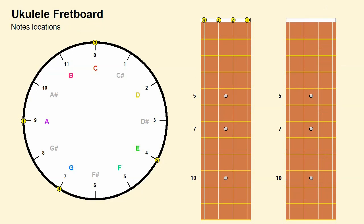Next we will see the use of the clock analogy in the problems of the location and identification of notes on the fretboard. To facilitate the explanation we have indicated the numbers of the strings both on the clock face and on the fretboard. The solution to the location problem is crucial for determining the fingerings of scales and chords along the fretboard. Suppose we want to determine all the locations of the note F on the fretboard of the ukulele.